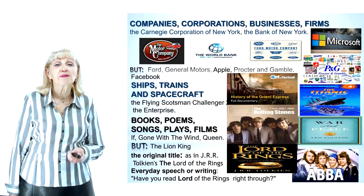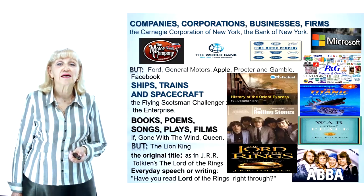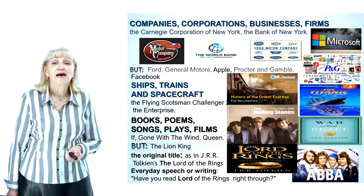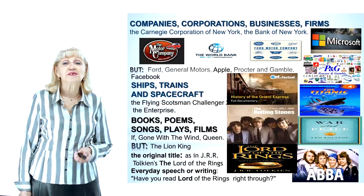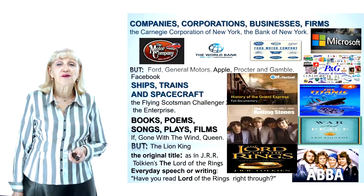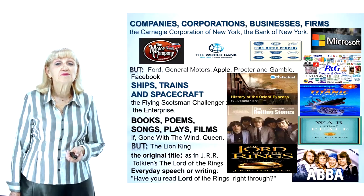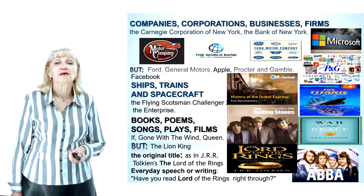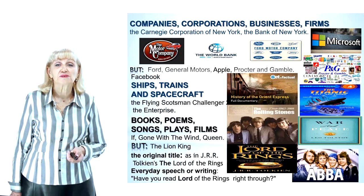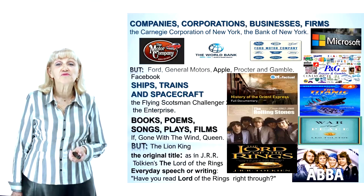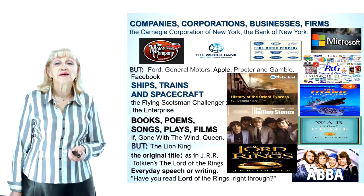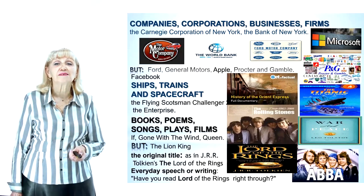The definite article is used for names of vehicles, ships, trains and spacecraft: the Titanic, the Orient Express, the Flying Scotsman, Challenger 2, the Enterprise. To give added punch, articles are often dropped in the titles of books, poems, songs, plays, films, music and other works of art — for example: Gone with the Wind, Queen. But: the Lion King. The article 'the' is usually used if the name is in the plural: the Rolling Stones, the Beatles — but The Who. Zero article if it is in the singular — for example: ABBA, Queen.